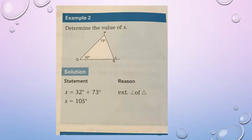Let's look at example 2. You can see it's exterior angles of a triangle. That x is equal to the opposite interior angles added together. So x equals 73 plus 32, which gives x equals 105. Very important: your reason is exterior angles of a triangle.